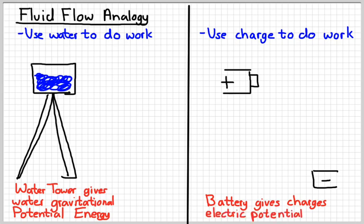The difference between the two is that there's two sides to a battery, whereas there's really one side to a water tower. That's because there's two kinds of charge, positive and negative, whereas there's only one kind of mass. And so there's a slight difference there.